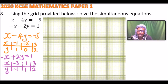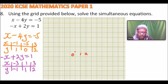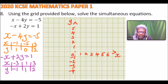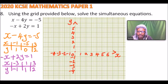We start setting up the grid. On the x-axis we have values 1, 2, 3, 4, 5, 6, and on the negative side minus 1, minus 2, minus 3, minus 4. On the y-axis we have 1, 2, 3, 4, 5, and on the negative side minus 1, minus 2, minus 3, minus 4. That should be enough to plot our points.